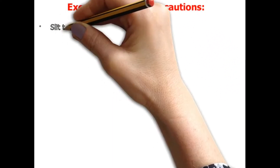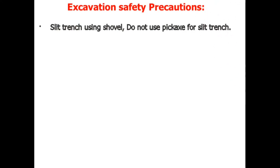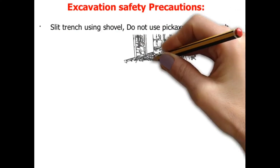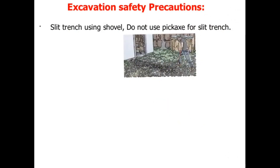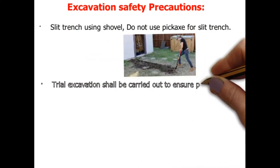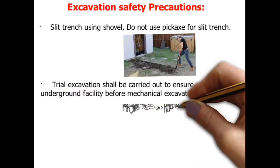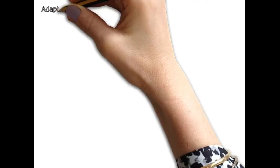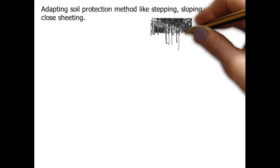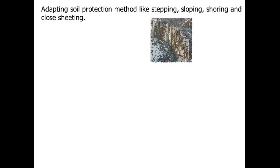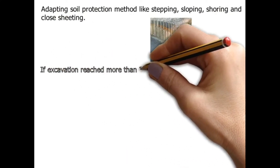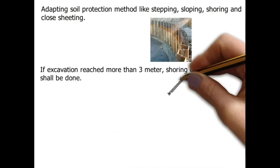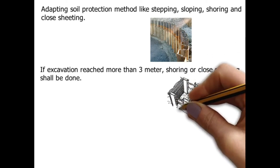Excavation safety precautions: slit trench using shovel — do not use a pickaxe for slit trench. Trial excavation shall be carried out to ensure protection of underground facilities before mechanical excavation. Adapt soil protection methods like stepping, sloping, shoring, and close sheeting.